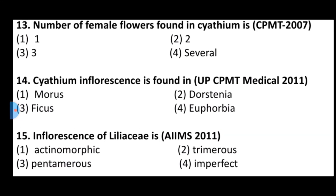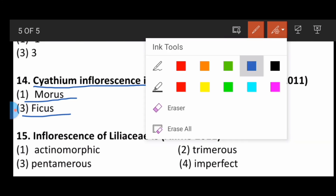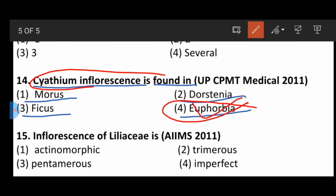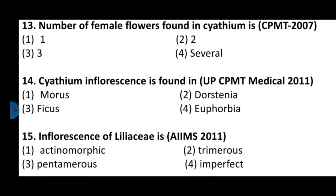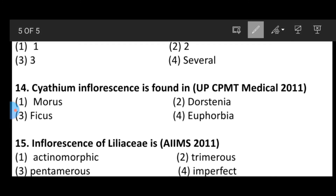Question number fourteen: Cyathium inflorescence is found in — option one: Morus, option two: Dorstenia, option three: Ficus, option four: Euphorbia. The correct answer is Euphorbia, where the cyathium type of inflorescence is generally found.